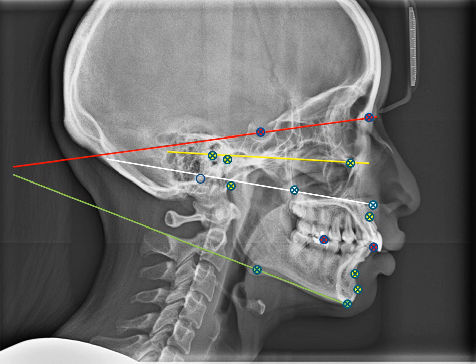When these lines are extended backward, certain angles are produced with each other. These angles can be used to assess the vertical relationship of the face. When these angles are increased, the patient is associated with an increase in vertical dimension or open bite. Conversely, when these angles are reduced, the patient can be associated with deep bite or reduction in vertical dimension.